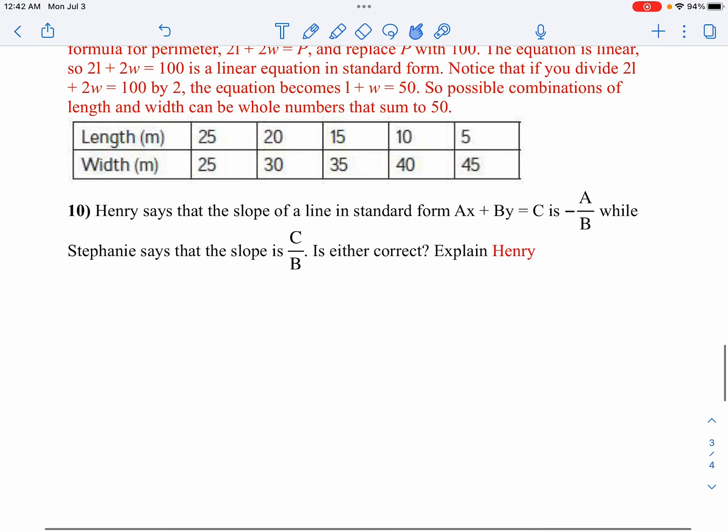Okay, number 10. Henry says the slope of the line in standard form is negative a over b, while Stephanie says the slope is c over b. Well, Henry is right on this one because the slope in standard form is negative a over b. We did that in our last assignment.